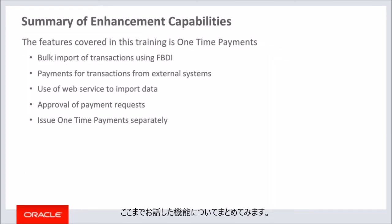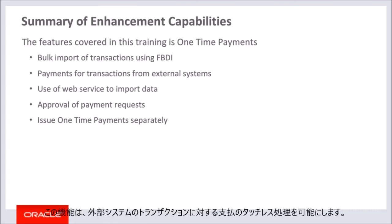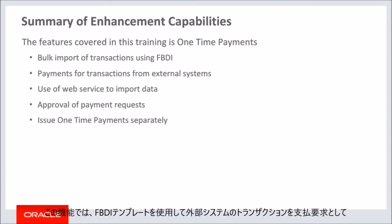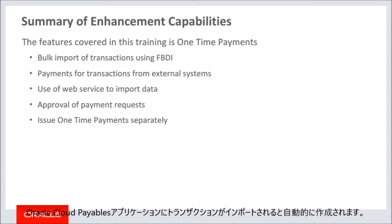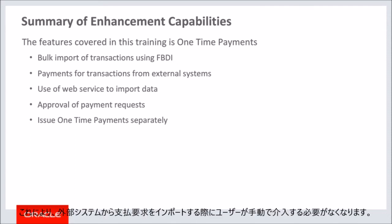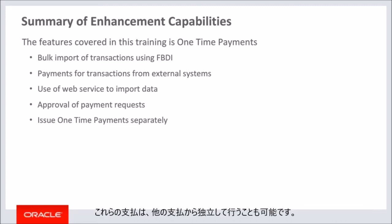Here's the summary of the feature I have talked about today. This feature will allow touchless processing of payments for the transactions from external systems. This feature allows you to import transactions from external systems as payment requests into Oracle Cloud Payables using the FBDI template, and you can approve these transactions before making the payment. The payees and any bank account information for electronic payments are created automatically when transactions are imported into the Oracle Cloud Payables application. This eliminates the need for manual intervention by users when importing payment requests from their external systems. You can also issue these payments separately from other payments.